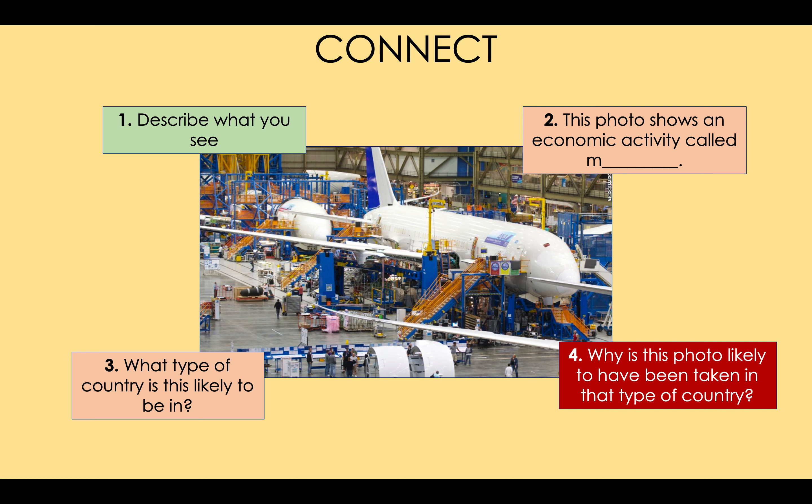And finally, the hardest question: why is this photo likely to have been taken in an HIC? There are three reasons. Number one: you need a lot of money to acquire the materials, build a factory, train and pay the staff to build an aircraft. Number two: people need to be highly educated to have the skills to build a product of this variety. Number three: in an HIC, crime is quite low, poverty is quite low, and hunger is very low, so people are very productive. As a result, airplanes are built in the USA — this is Boeing, the biggest airplane company in the world.